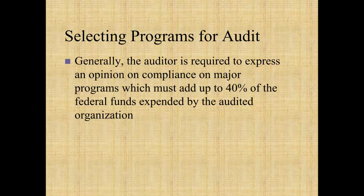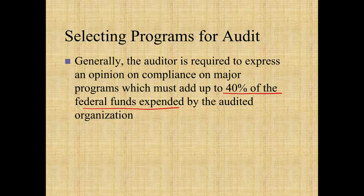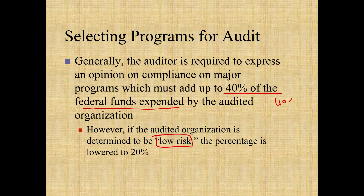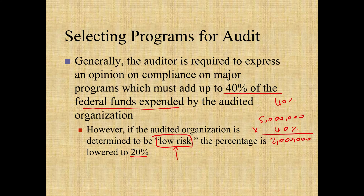The auditor is required to express an opinion on compliance on major programs, which must add up to 40% of the federal funds expended by the audited organization. For example, if total federal expenditure is $5 million, you must audit 40% — which is $2 million. If the audited organization is determined to be low-risk, this percentage goes down to 20%, meaning $1 million — less work because the organization is considered low-risk.